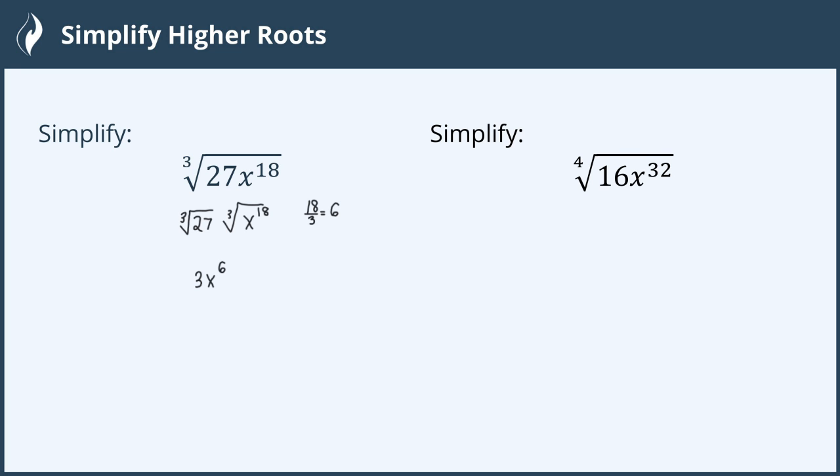The same idea is true for the fourth root of 16x to the 32nd. Break this into two parts, one for the whole number and one for the variable, and let's look at each individually.